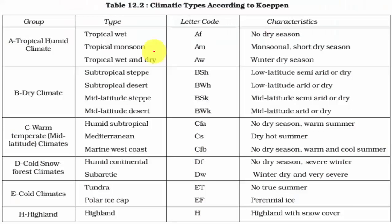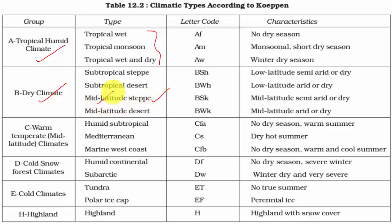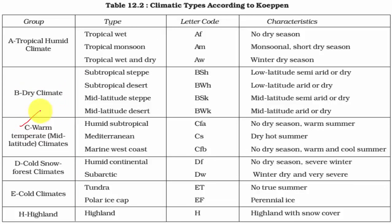Under the Koppen Scheme of Classification we have studied about a few very important climatic types under the tropical humid type of climates, and then we have studied about the dry type of climates — desert (arid type) as well as semi-arid type. The mid-latitude steppe is a temperate region climate but it is semi-arid, so it is grouped under dry type (alphabet B) under the Koppen Scheme. Now in this video we will begin with the warm temperate type of climatic regions, indicated by alphabet C.